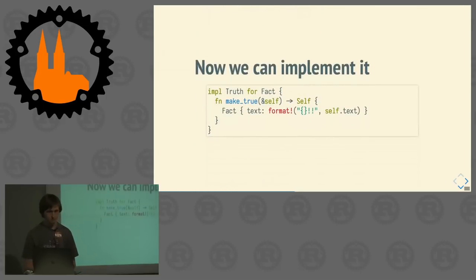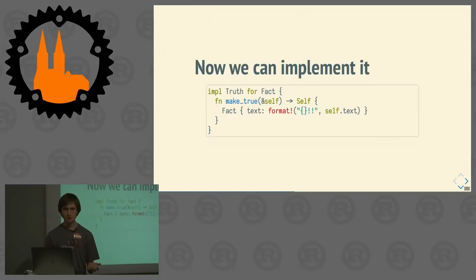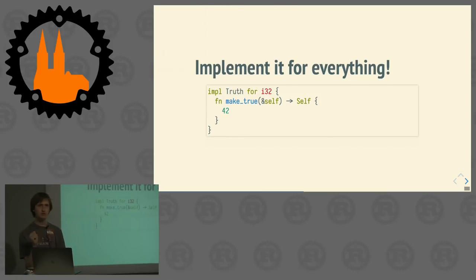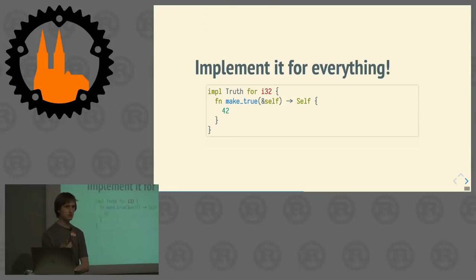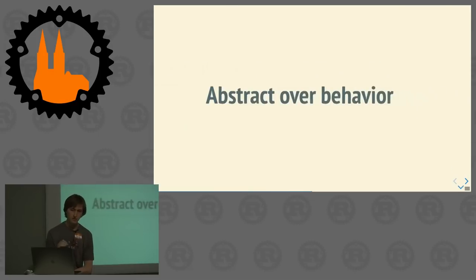Let's implement it first. Same thing we did above, except for the first line where we say `impl Trues for Fact`, and not just `impl Fact`. You can implement this trait for basically everything if you wanted to — for example, for integers, we could make integers true. Why are we even doing this? The most obvious advantage is that we can now name these concepts.